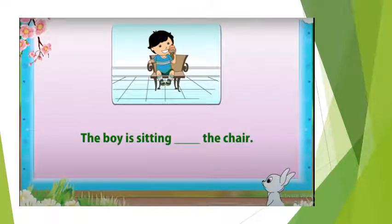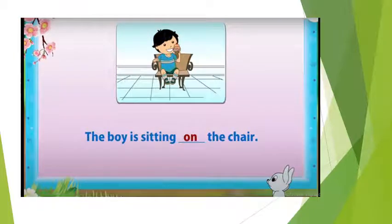The boy is sitting dash the chair. Now, which preposition will come here? You are going to tell me. Yes, you are right. The boy is sitting on the chair.